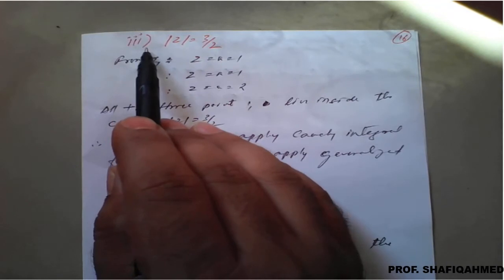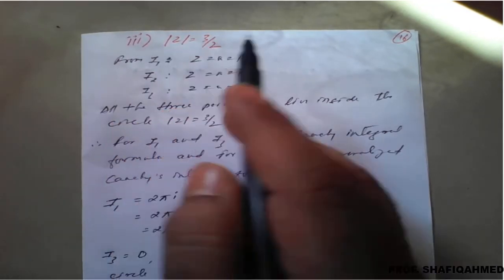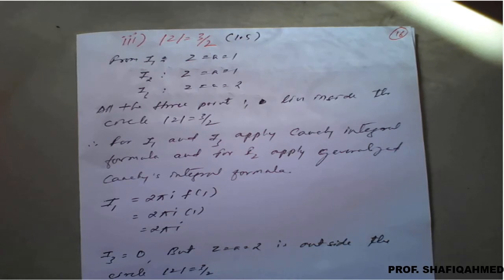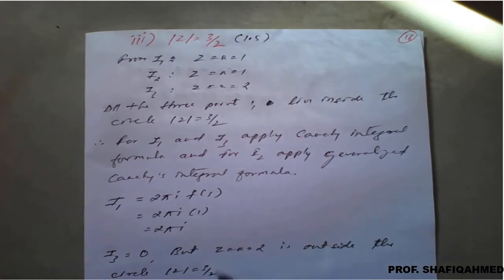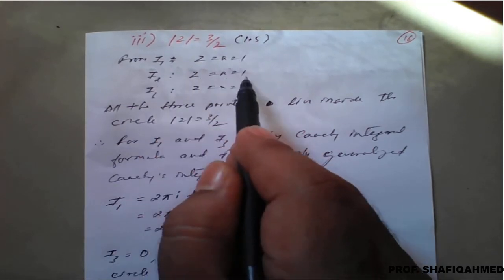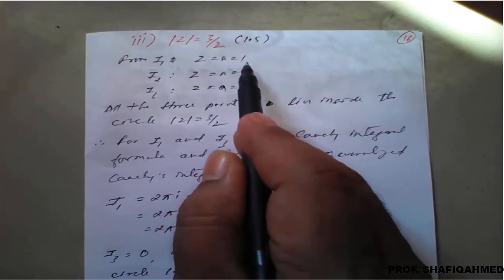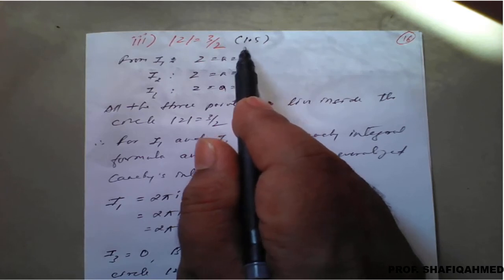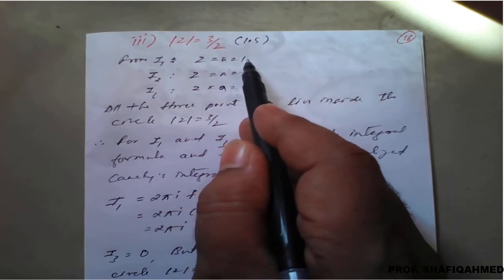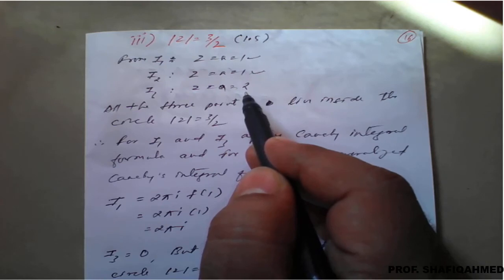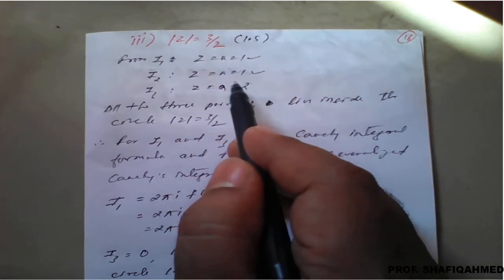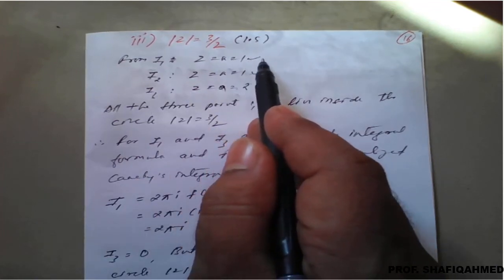For circle 3, |z| = 3/2 = 1.5. The pole a = 1 lies inside the circle, but the pole a = 2 is outside since 2 > 1.5. Therefore I3 = 0 directly, and we only need to find I1 and I2.